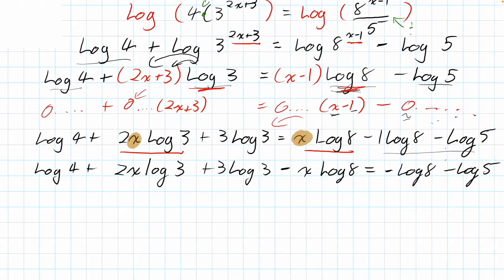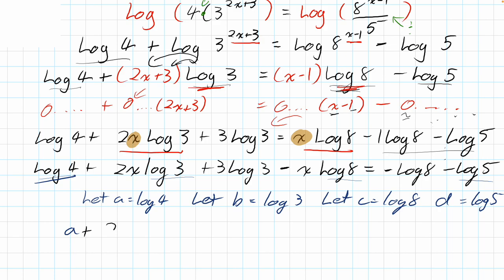What might be easier at this point, to be honest, is if I use something called a let statement. I could say, the only problem is I've got 1, 2, 3, 4 different ones. I could do a bunch of stuff where I say, let a equal log 4. Let b equal log 3. Let c equal log 8. And let d equal log 5. Why would I do that? It's just because logs are pretty new to me, let's say. So, I'm going to replace this with just the letter a. a, I know how to move around. That's pretty simple to me. So, 2x, I'm going to replace with the letter b. This becomes plus 3b. Minus x equals c. Is equal to negative c. And then minus d.